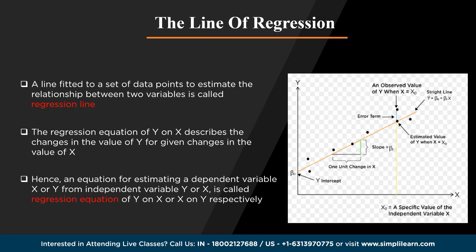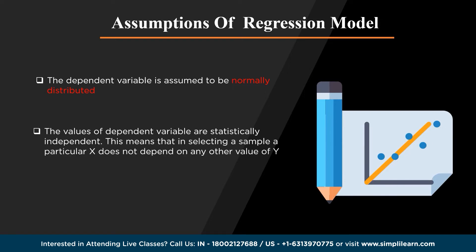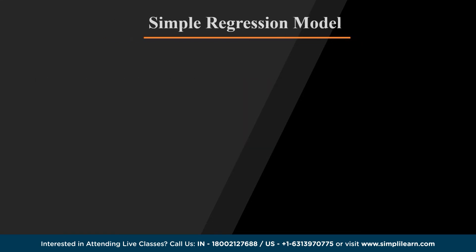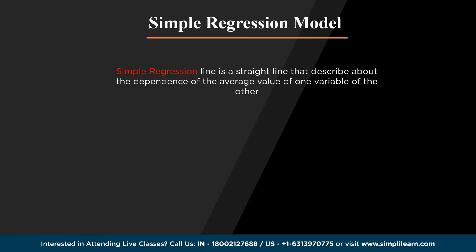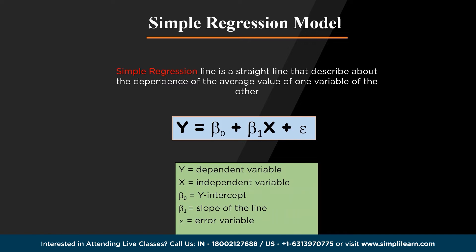Let's discuss two key terms in the regression graph. The first is slope — the ratio of the vertical and horizontal distances between two points on a line. The second is y-intercept — the coordinate of the point at which the curve intersects an axis. There are some assumptions for the regression model: the dependent variable is assumed to be normally distributed; the values of the dependent variable are statistically independent; and error values are statistically independent. The simple regression model equation is y = b0 + b1x + e, where b0 and b1 represent the y-intercept and slope respectively, and e is the error variable.